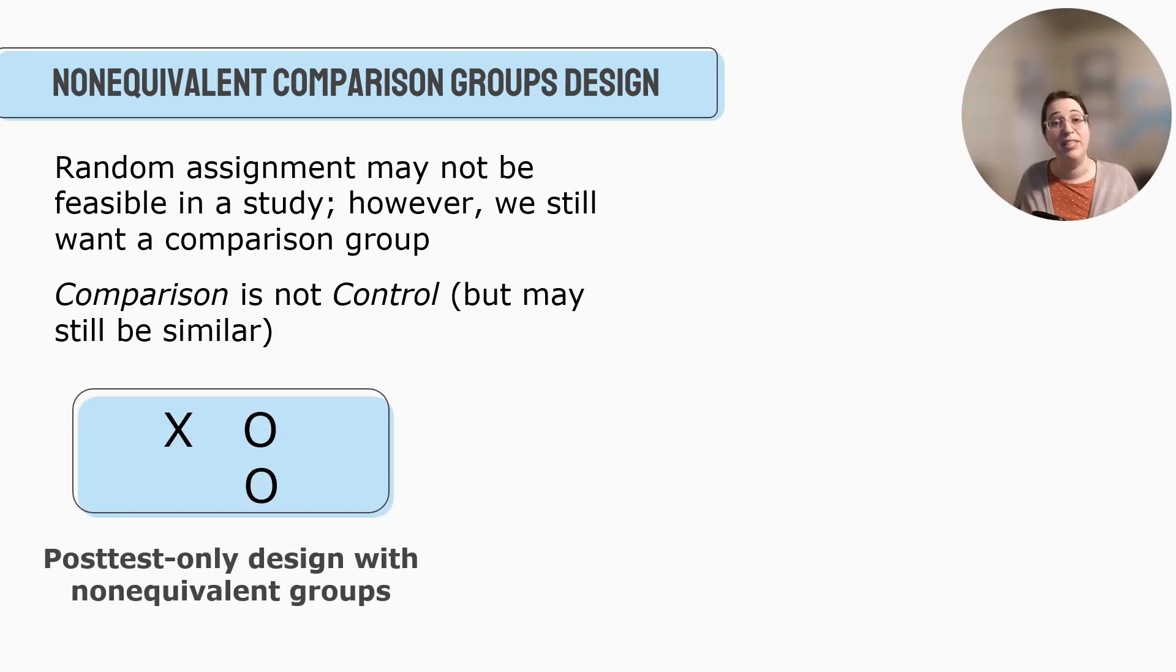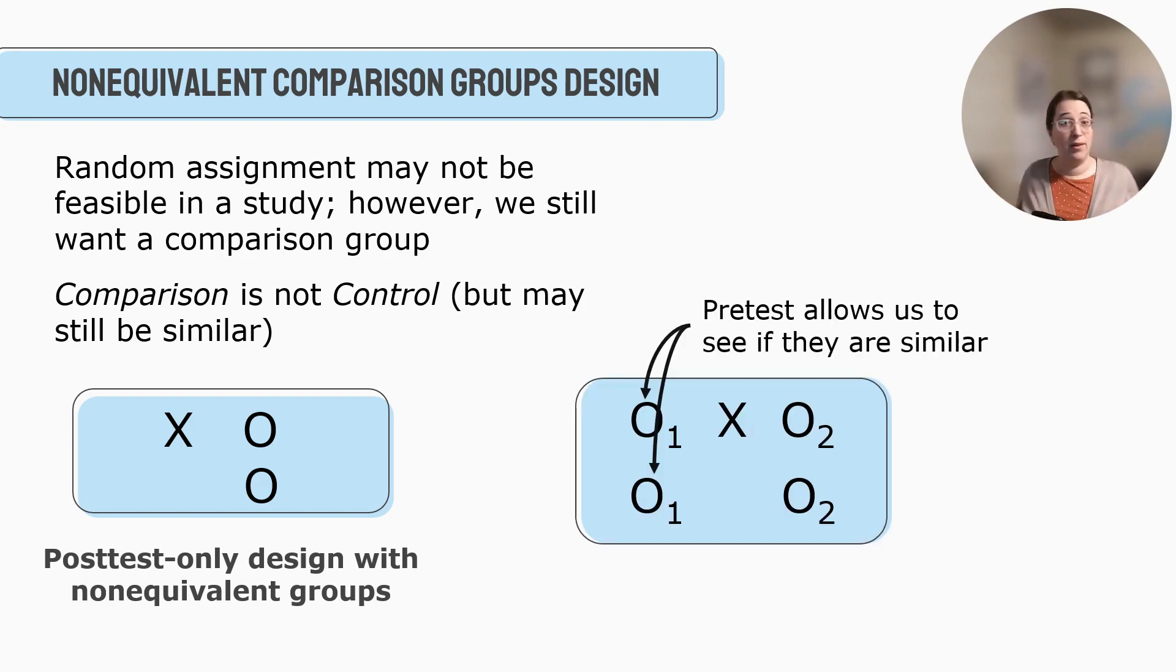Similar to the pre-experimental and experimental designs, we also use the same notation with the X's and the O's. So here's an example of one we talked about where you have the post-test only design with non-equivalent groups. And you'll notice there's no R. R is only when there is random assignment. Like we talked about in the pre-experimental designs, that post-test only design is really limited. We can't see progress over time. We can't say the intervention helped. What if our motivated group started with a much higher score in the first place? So we can't really assume any sort of causal inference.